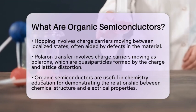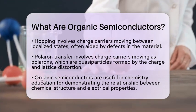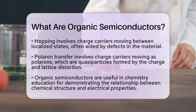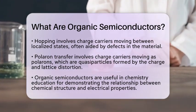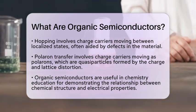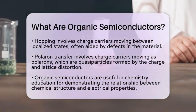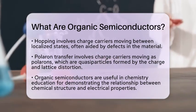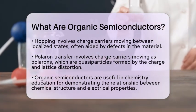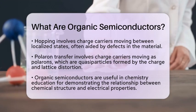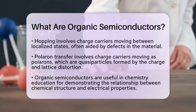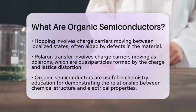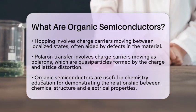In chemistry education, organic semiconductors are particularly useful for teaching about electrical properties of polymers. They illustrate how a material's conductivity can change based on its chemical structure and environmental conditions. This variability is essential for understanding polymer charge transport, which plays a significant role in developing new electronic devices.